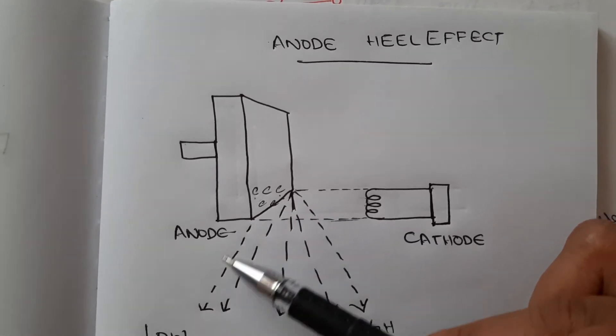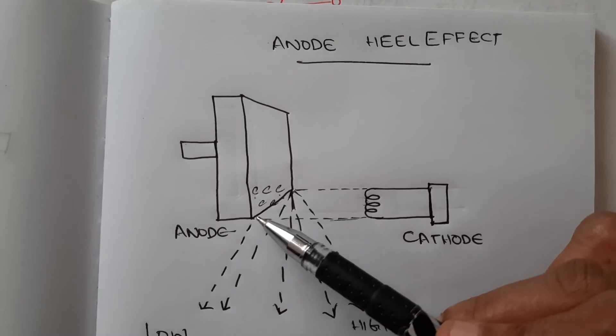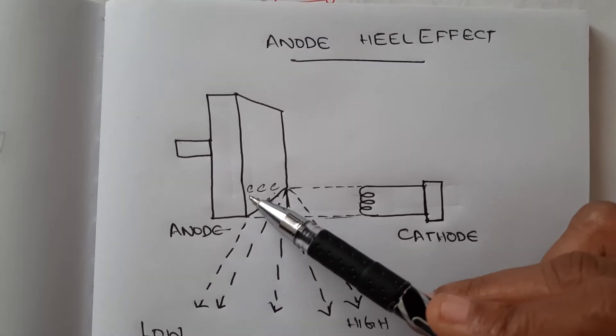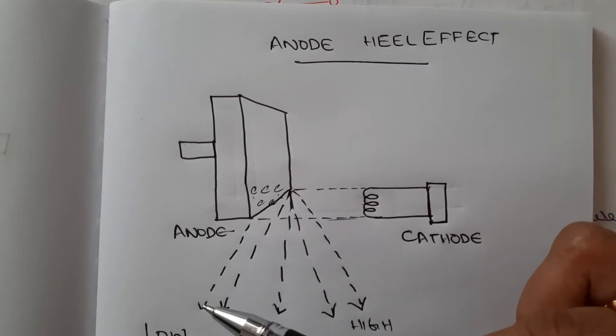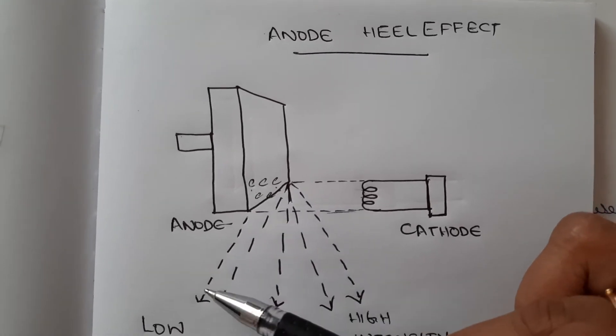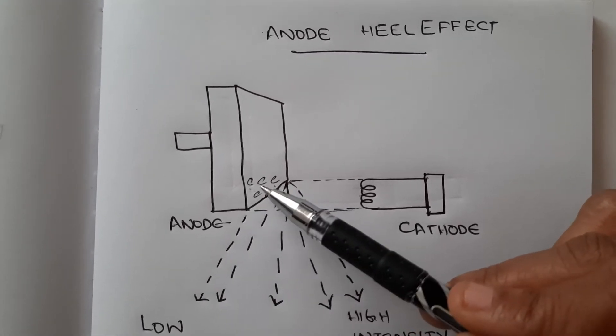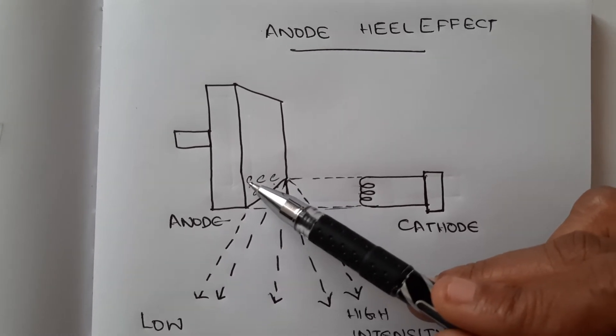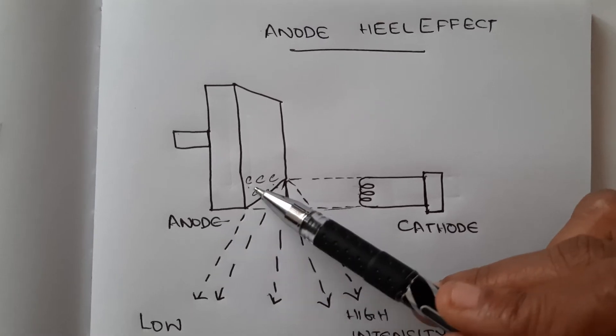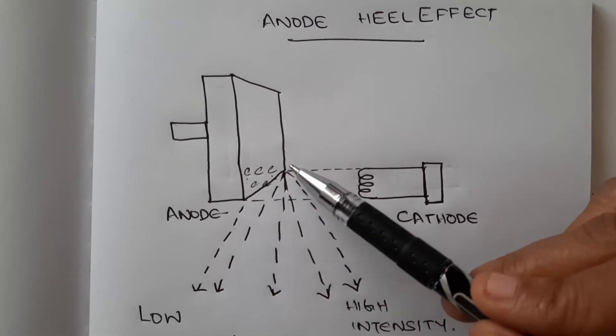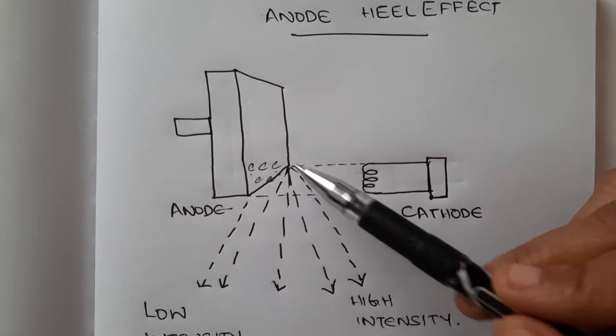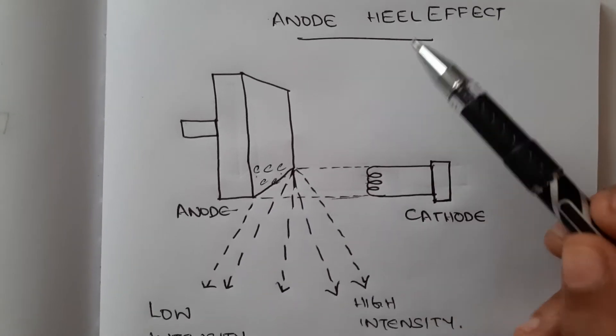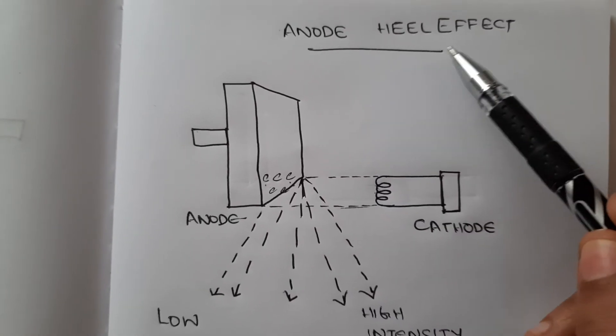The x-ray photons we get towards the anode are due to electrons that are more deeply absorbed. Their intensity is reduced as a result of absorption of a certain amount of energy by the target, compared to electrons that produce x-rays towards the cathode side. This causes the effect known as the anode heel effect.